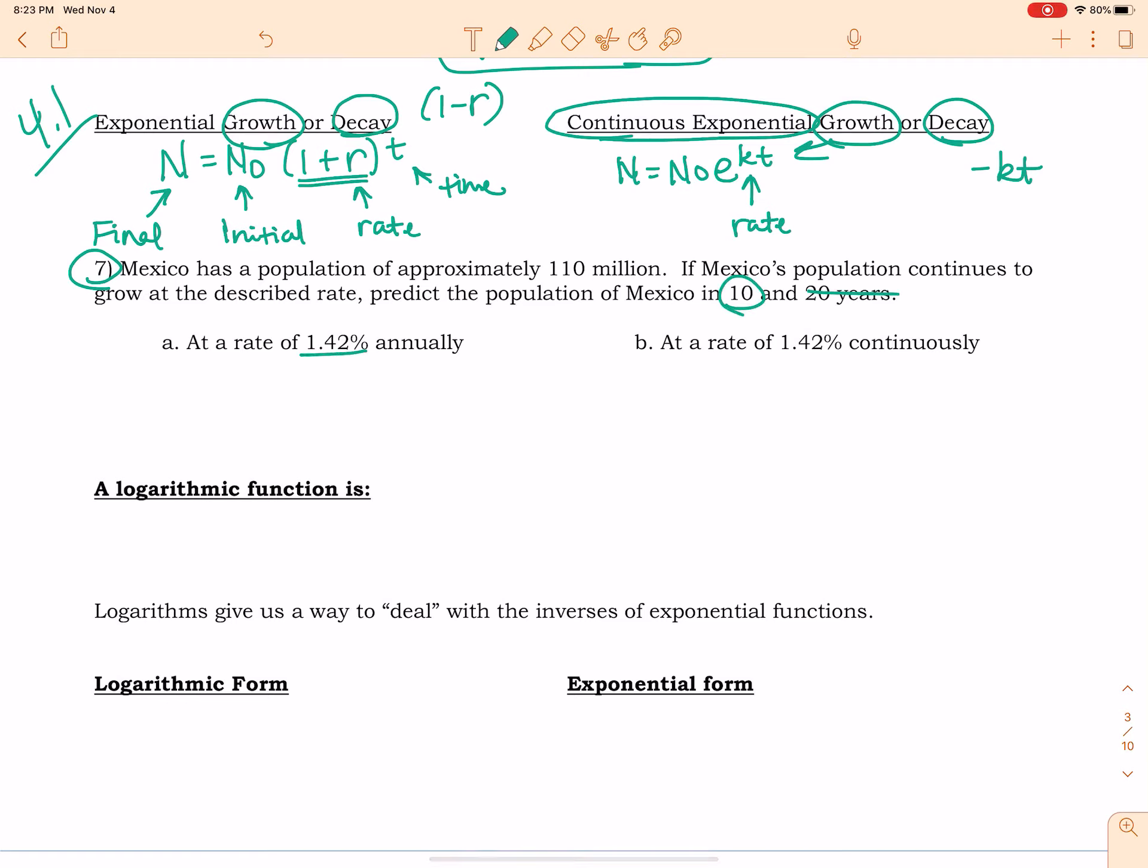So at a rate of 1.42% annually, what does that look like? Alright, so I am going to use my first formula because notice it says annually, not continuously. Continuously, we'll use this one. So I am going to start with an initial value of 110 million. If it makes you more comfortable to think of the whole number, we'll write it out just like that.